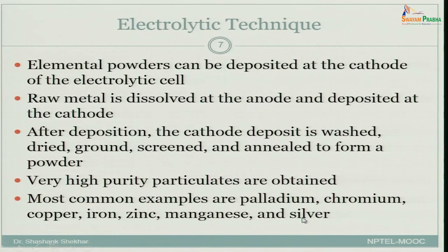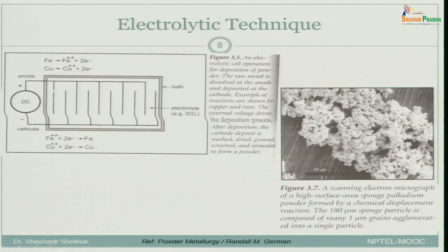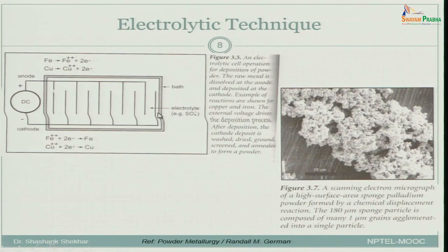This technique is much more useful for metals, particularly if you want high purity metals. The figure on the right gives a rough idea of how the deposit looks — it may look like a big lump but it is nothing but a cluster or agglomerate of small powder. The schematic shows the anode, cathode, voltage source, and electrolyte in between, with large surface areas on both electrodes.